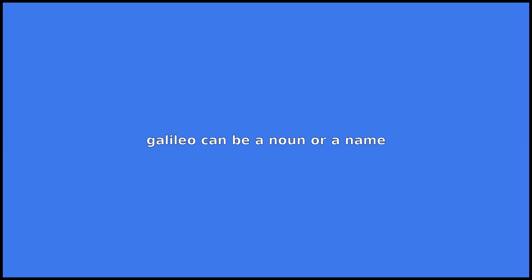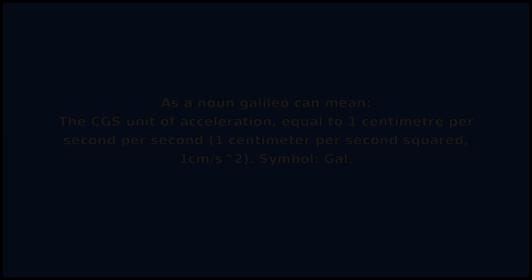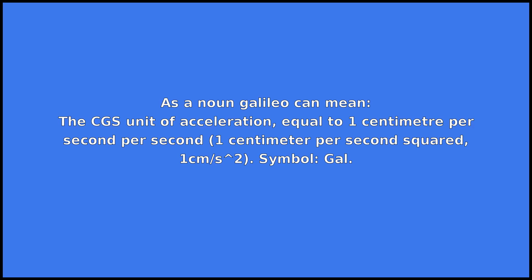Galileo can be a noun or a name. As a noun, Galileo can mean the CGS unit of acceleration equal to 1 cm per second per second, also written as 1 cm per second squared or 1 cm per square second, with the symbol gal.